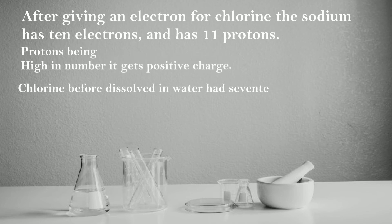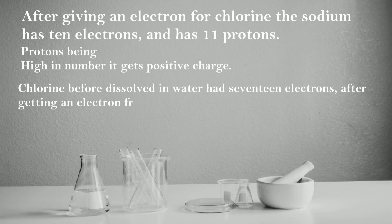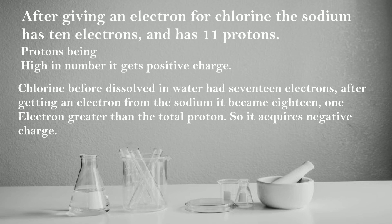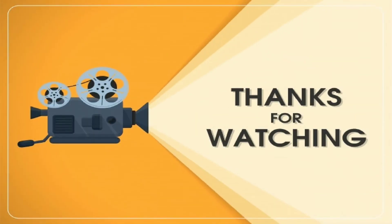Chlorine, before dissolved in water, had 17 electrons. After getting an electron from the sodium, it became 18, one electron greater than the total proton. So it acquires negative charge. Thanks for watching.